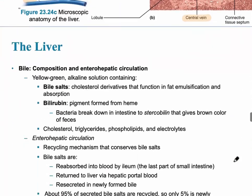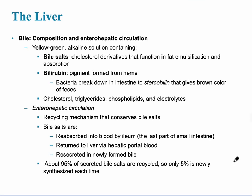The liver's main function is to produce bile. Bile is a yellow-green alkaline solution with a higher pH, and it's composed of bile salts — cholesterol derivatives that help emulsify fat for absorption. Emulsify means to break down into smaller pieces for absorption. Bile also contains bilirubin, a pigment formed from heme, which leads into the enterohepatic circulation.